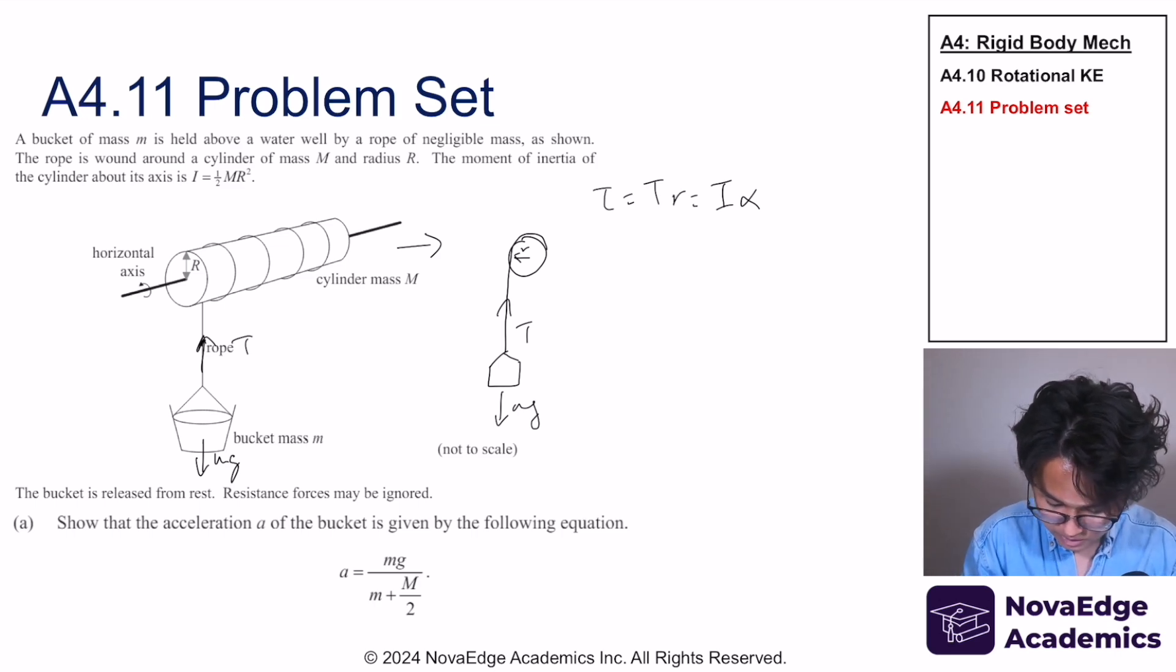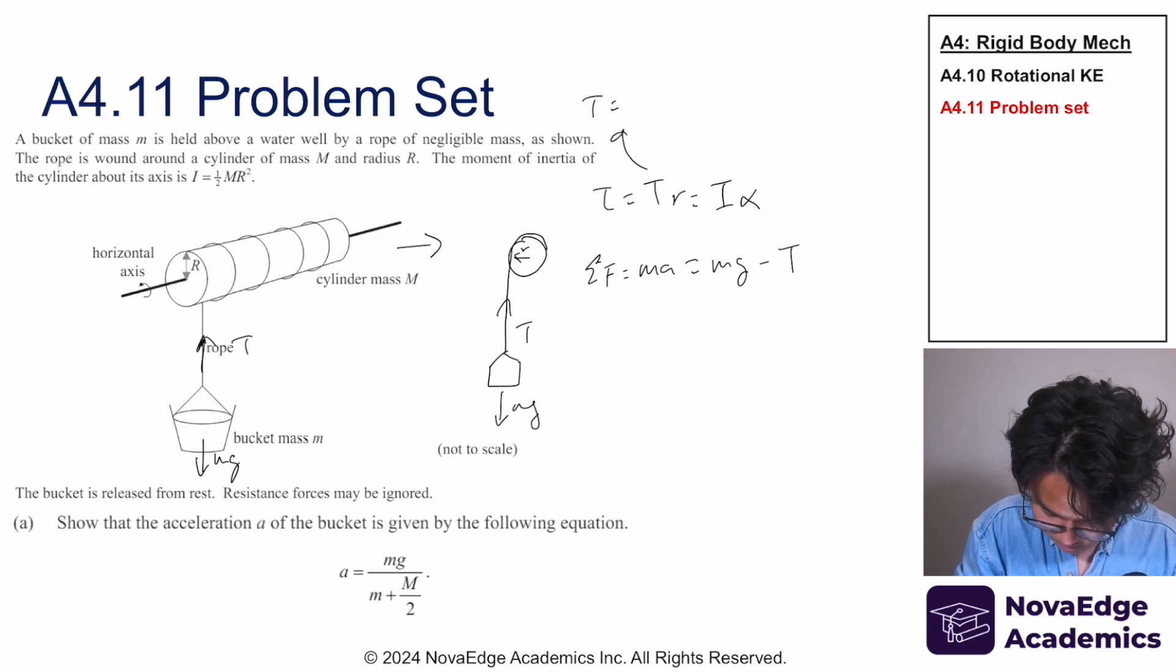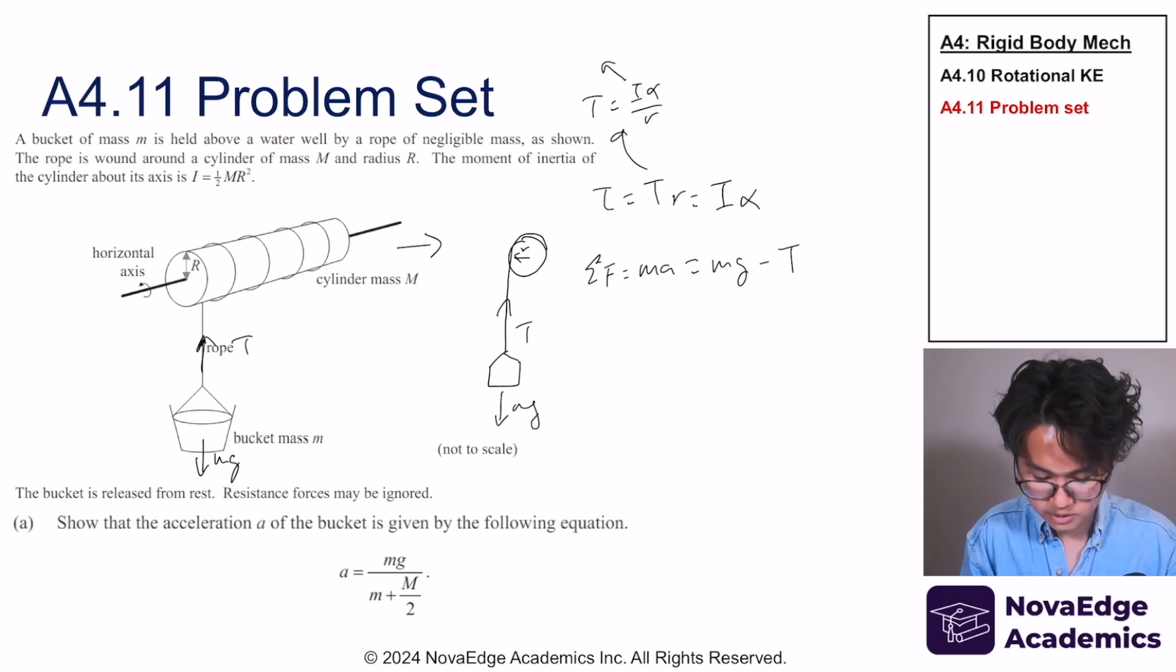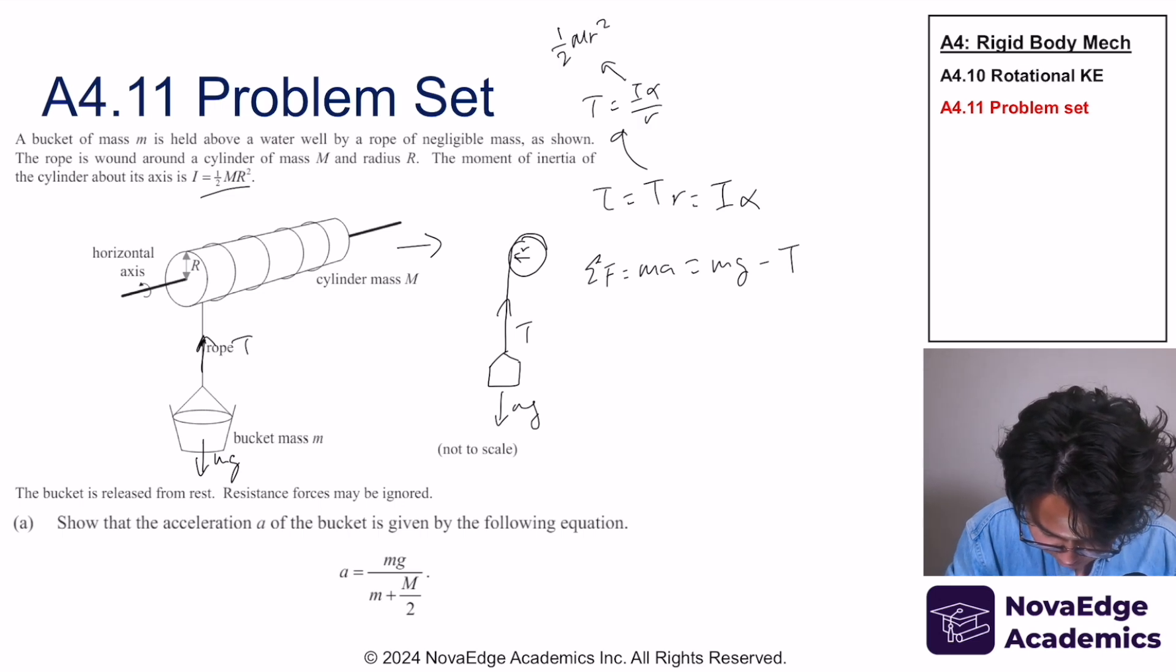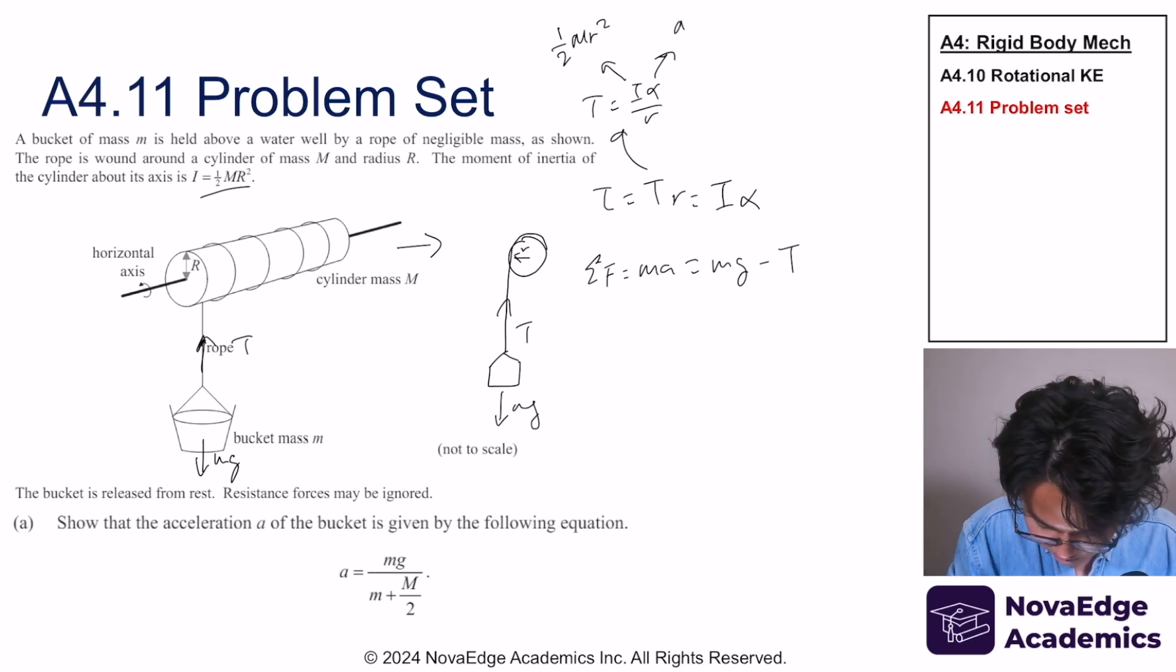Now what we're interested in finding out is the acceleration and how to find the acceleration? Well, we need to find the net force. Net force is equal to ma which is equal to mg minus t. If we rewrite this, we get tension is equal to mg minus ma. Now one thing to remember, moment of inertia is equal to 1/2 mr² and this rotational acceleration is equal to a over r.